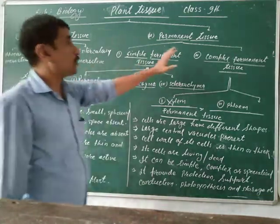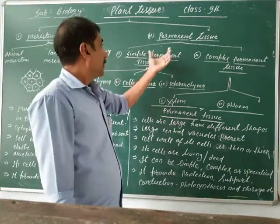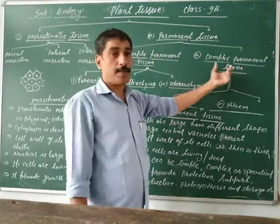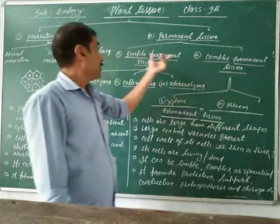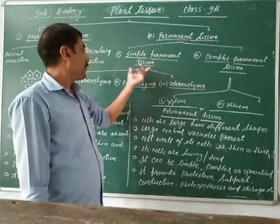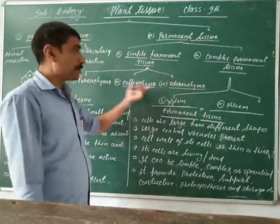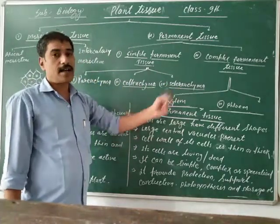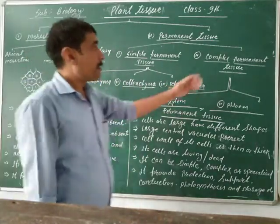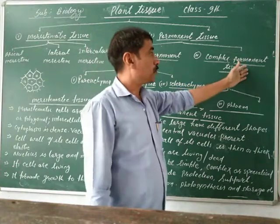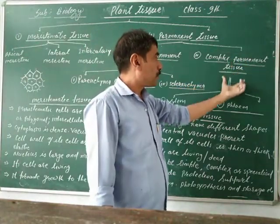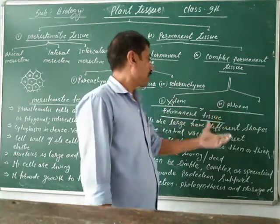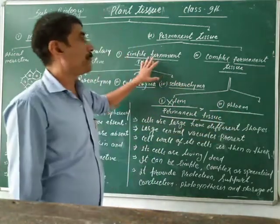Now, permanent tissue. These are two types: simple permanent tissue and complex permanent tissue. Simple permanent tissue is classified into three groups such as parenchyma, collenchyma, and sclerenchyma. Complex permanent tissue has two parts such as xylem and phloem. These are the classifications of plant tissue.